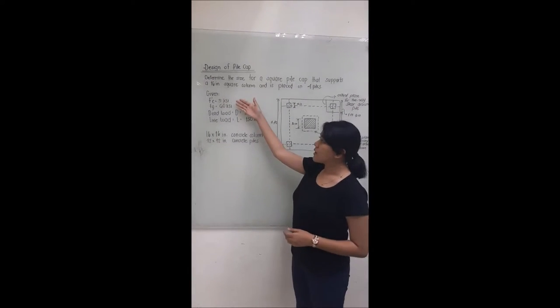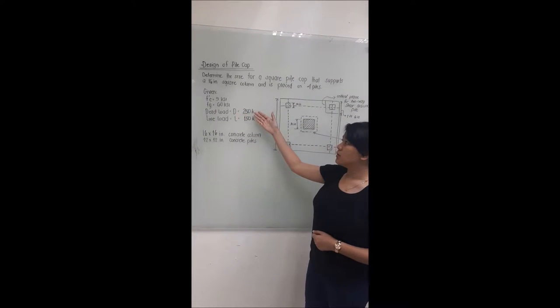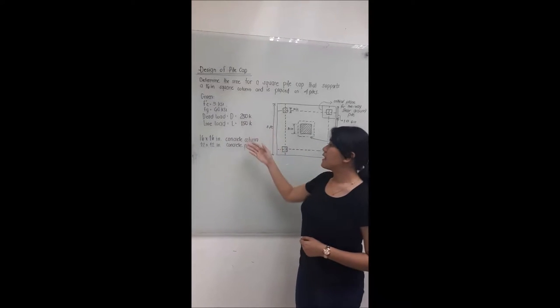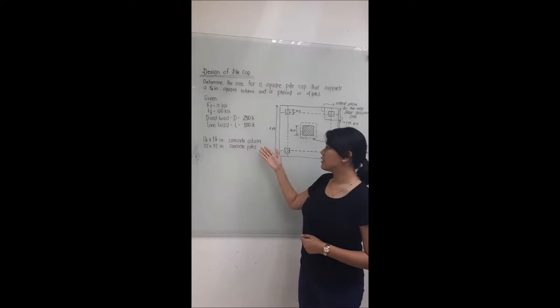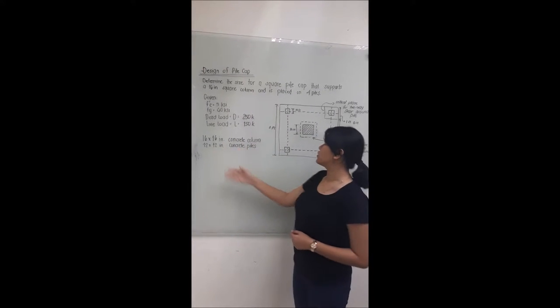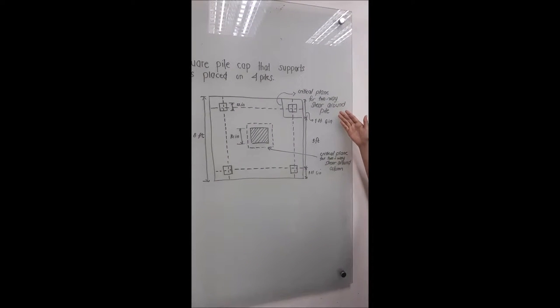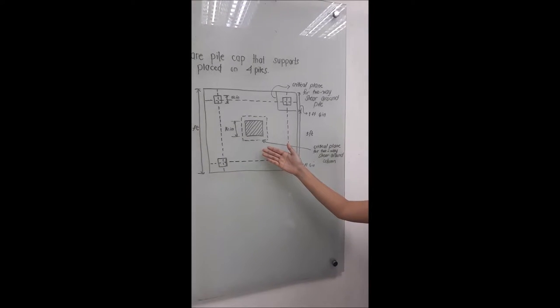Given: FC prime is equal to 5 KSI, FY is equal to 60 KSI, dead load is 250 kips, live load is 150 kips, and the concrete column dimension is 16 by 16 inches while the concrete pile is 12 by 12 inches. Here is the section of the critical plane for two-way shear around pile and here is the critical plane for two-way shear around the column.